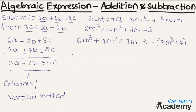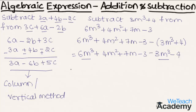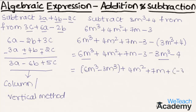Now let us group the like terms. This would come as 6m³ minus 3m³, plus 4m², plus 7m, and we have two constant terms minus 3 and minus 4. So 6m³ minus 3m³ would be 3m³, plus 4m², plus 7m, and minus 3 minus 4 is minus 7.